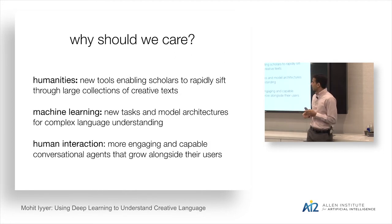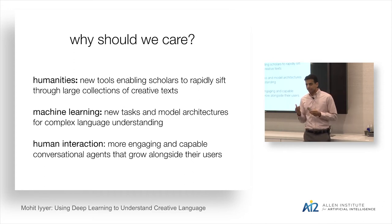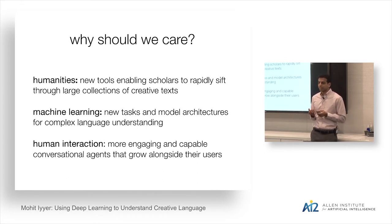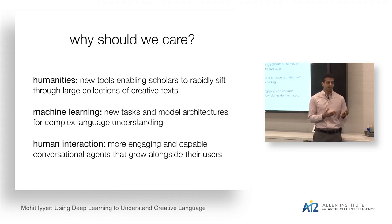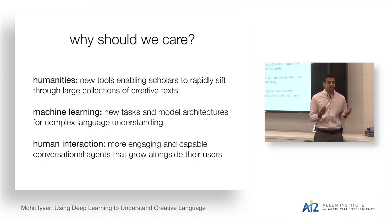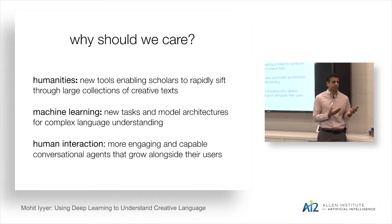Before going on — why should anyone care about creative language understanding? I've listed three motivations. The first is on the digital humanities side: researchers use distant reading, turning to computers to make sense of large collections of novels that would take enormous time to read manually. A computer that could help with this would dramatically speed up their research workflow. On the machine learning side, the tasks we're looking at are very different from standard NLP tasks, and they lend themselves to new model architectures. I'll also talk about the human interaction component at the end.